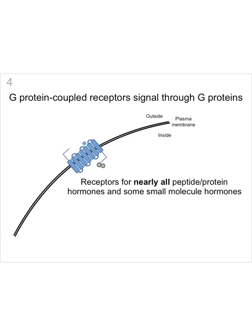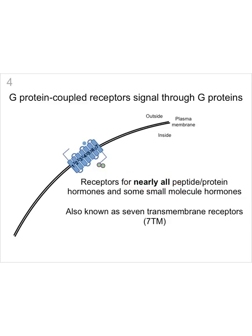G-protein-coupled receptors are very important because they are receptors for nearly all peptide and protein hormones in the cell, and also the potential receptor for some small molecule hormones such as sex hormones. These proteins are also known as seven transmembrane receptors because they have seven transmembrane domains. The hormone binds to the outside, and then the tail of the receptor binds to effector proteins within the cell. This is a very large family — probably around a thousand seven-pass transmembrane proteins in the human genome, of which 100 to 200 are hormone receptors.